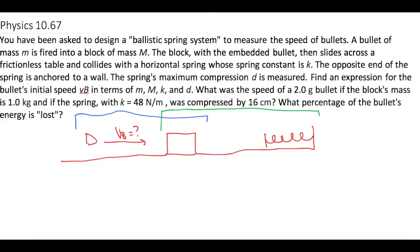Let's look at the block and the spring. The spring has not been compressed at all, so the spring's delta x is 0, meaning it has no spring potential energy. The block has a speed of 0 meters per second, so it has no kinetic energy. It also has no gravitational potential energy because its delta y won't change. The bullet has kinetic energy, so all the energy in this problem is coming from the bullet.